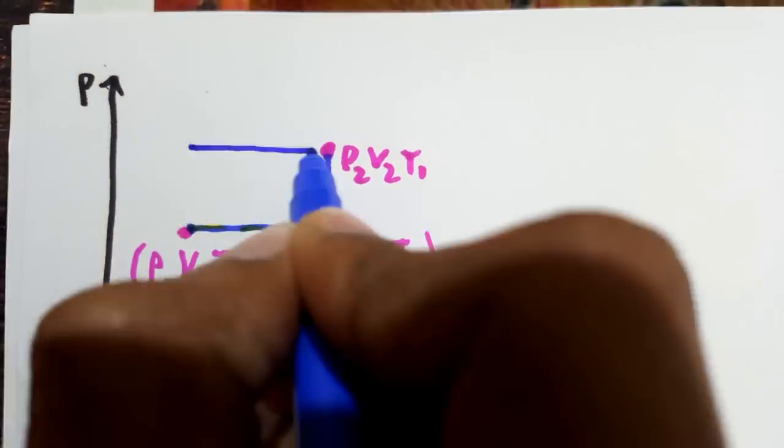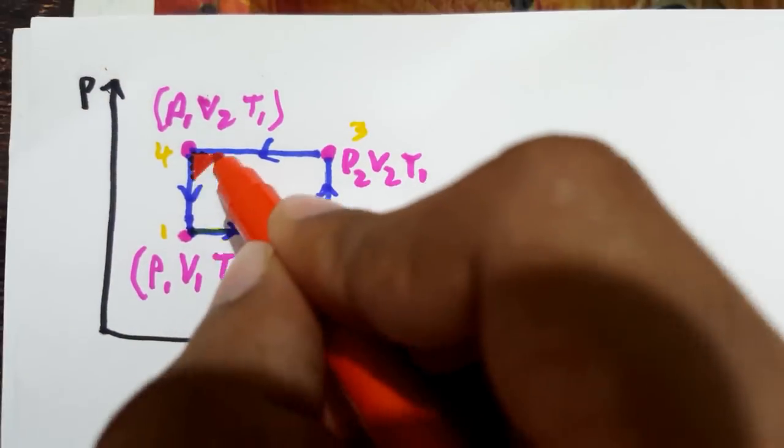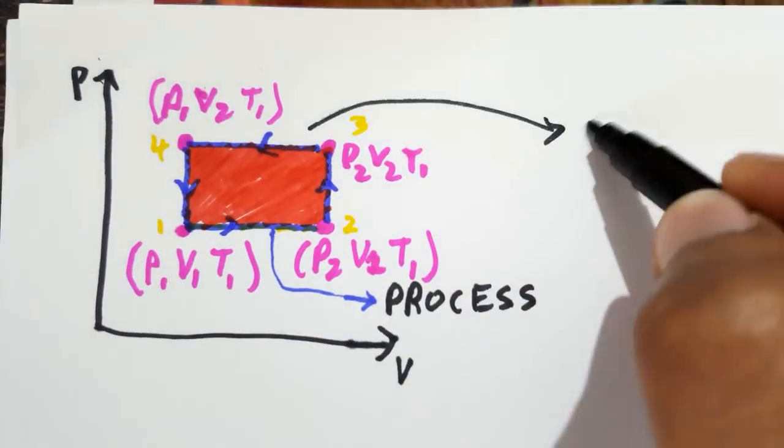For example, a constant pressure process. A cycle is defined as a series of state changes such that the final state is identical with the initial state.